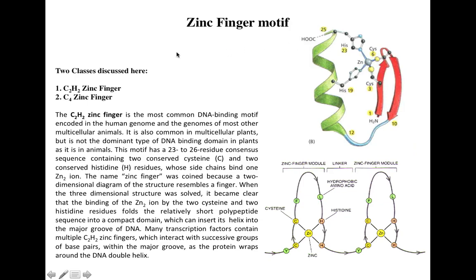There are basically two classes we are going to talk about here: one is C2H2 zinc finger proteins and the second is C4 zinc finger proteins. C2H2 zinc finger proteins are the most common DNA binding motifs in the human genome and in the genomes of many other multicellular organisms. They are also common in multicellular plants but not as dominant in plants as they are in animals.